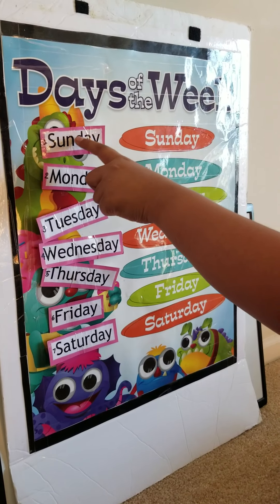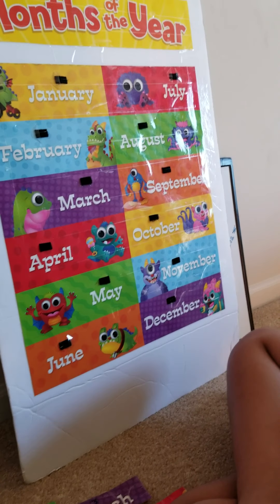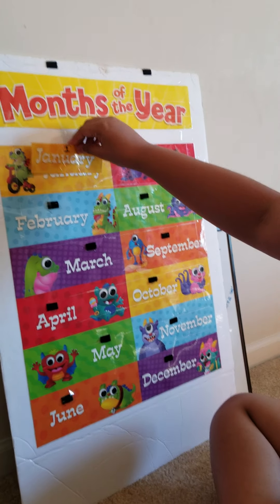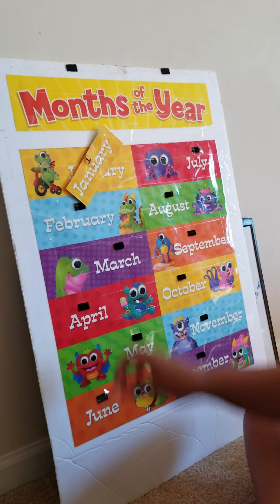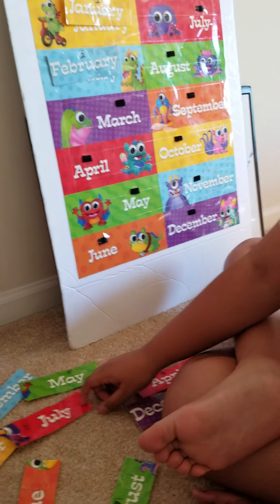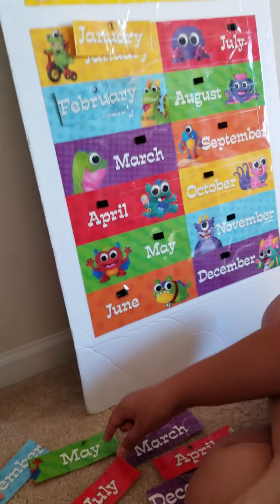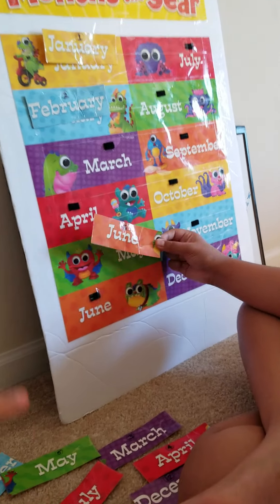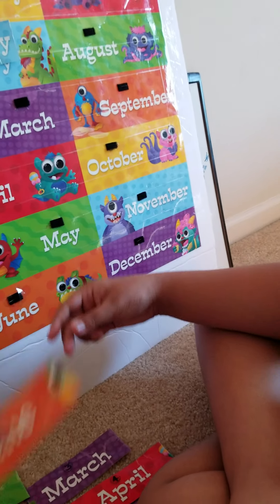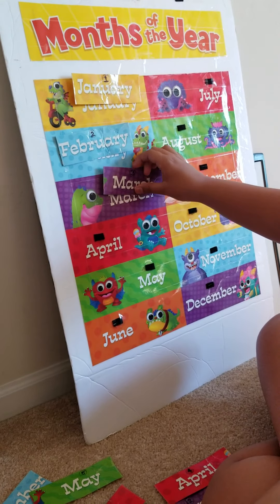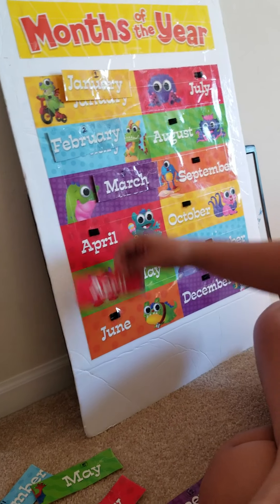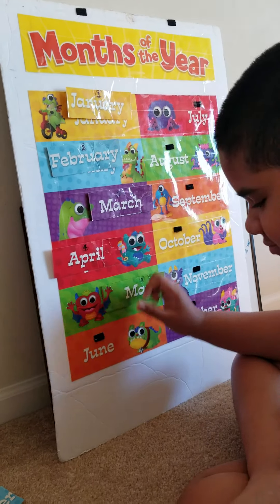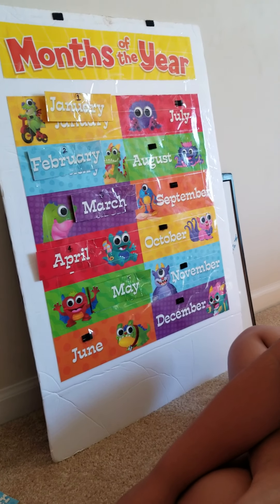Good job, baby boy! Keshav is going to match the months of the year. Go, Keshav — January, February. No, no, no, Keshav — number three, which one is number three? March. Number four — April.